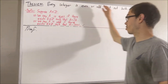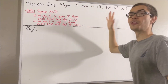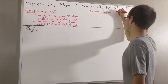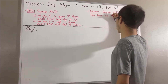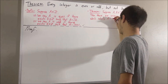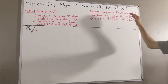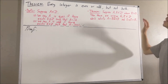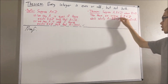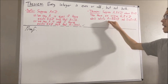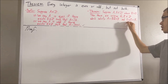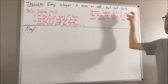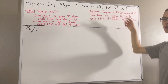In proving this theorem, we are going to use the following theorem: suppose A and B are integers where B is greater than 0. Then there are unique integers q and r which satisfy A equals Bq plus r, and 0 is less than or equal to r is less than B. This theorem is sometimes called the division algorithm.